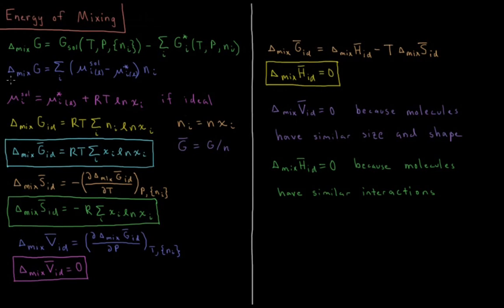Using equations developed in previous videos, the Gibbs energy of mixing equals the sum over all components of the chemical potential of that component in solution minus the chemical potential of it as a pure liquid, times the number of moles of that substance. So it's really all about the change in chemical potential going from pure liquid to solution.